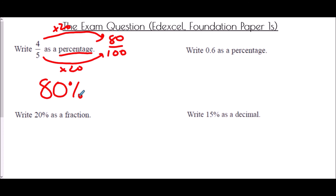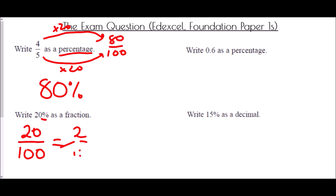To write 20 percent as a fraction: percent means over 100, so it's 20 over 100. That is an acceptable answer, but simplify: both divide by 10 to give 2 over 10, and both halve to give one fifth.